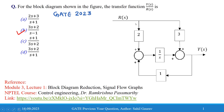This problem has been asked in GATE 2023 and belongs to control systems. The problem is about how we can find the transfer function — the basics of signal flow graph and block diagram reduction. Before solving this problem we will have a quick recap of the signal flow graph.